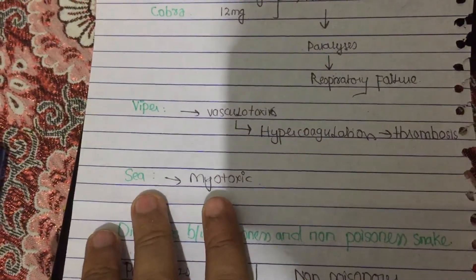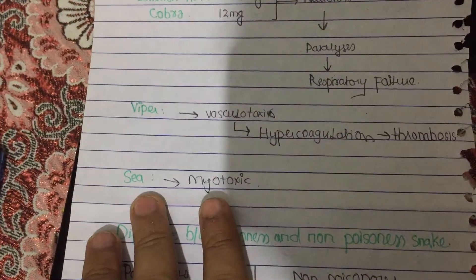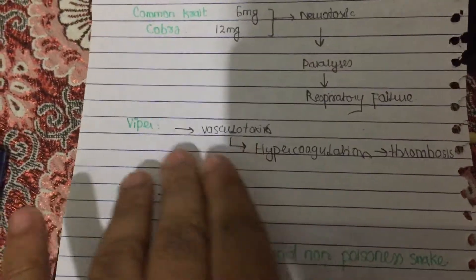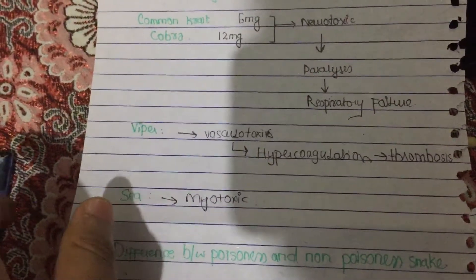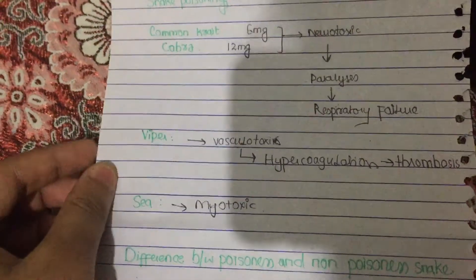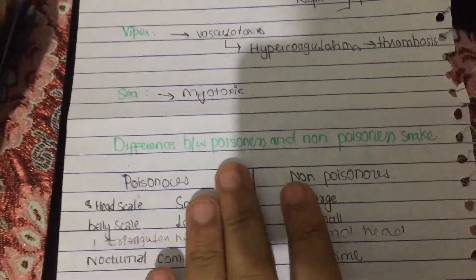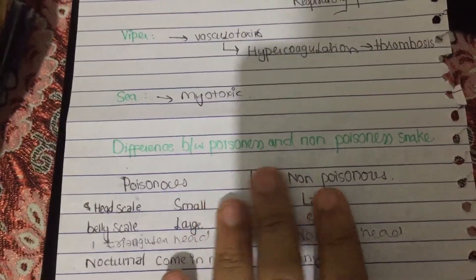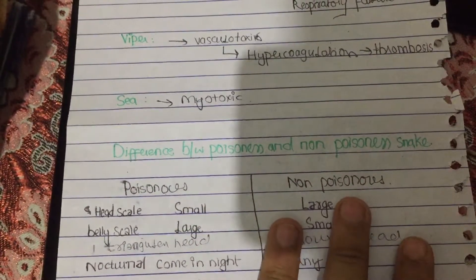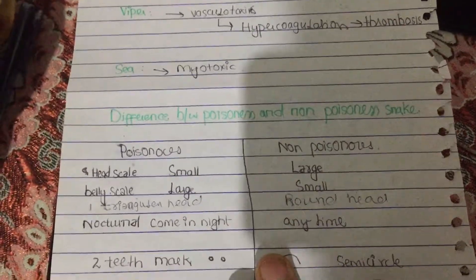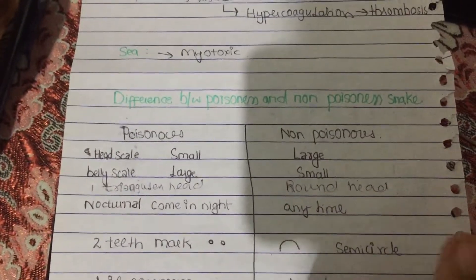Then we have the sea snake, which is myotoxic. Now we're going to discuss the difference between a poisonous snake and a non-poisonous snake.